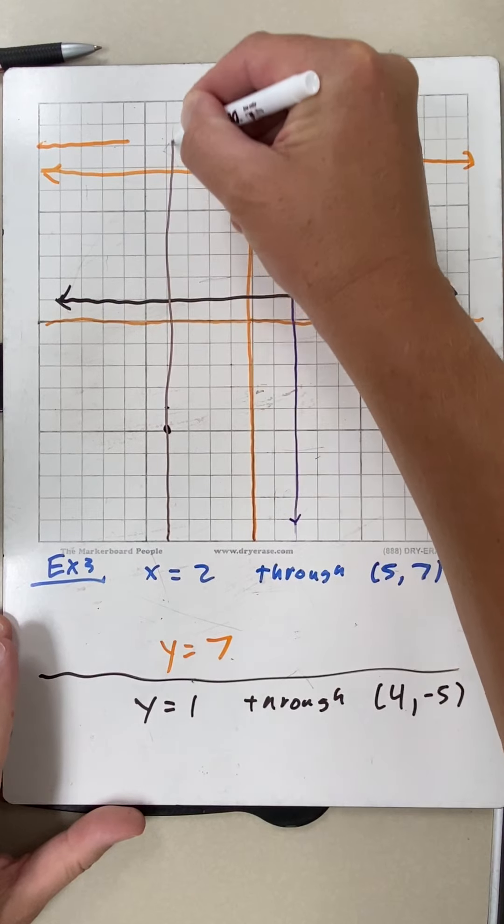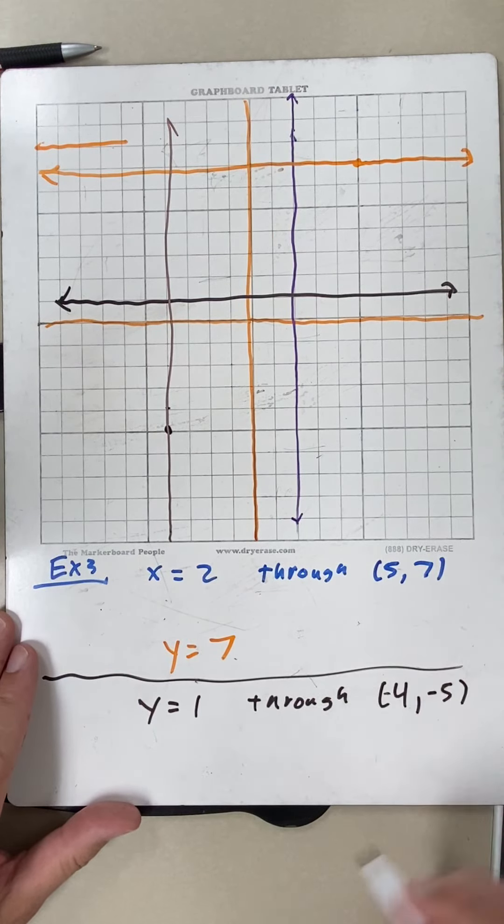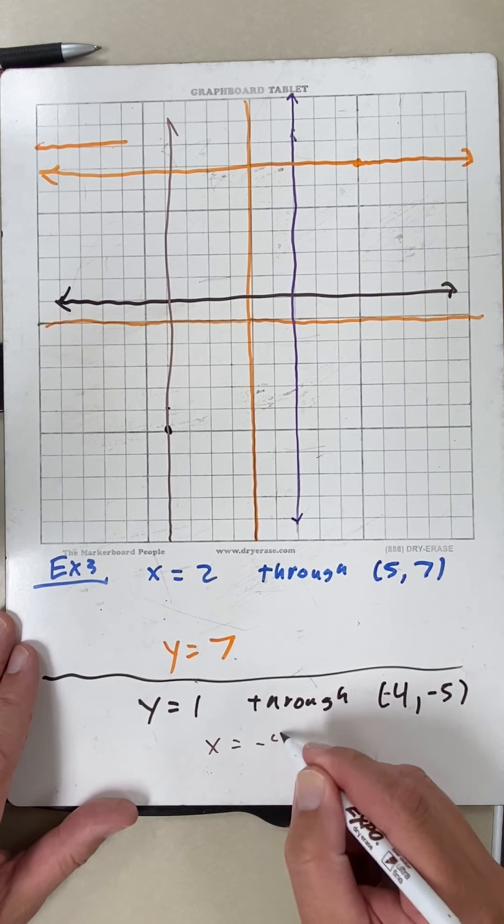So for this one, oh shoot, I screwed up. Let's make this a negative 4. Okay. So now my equation is x equals negative 4.